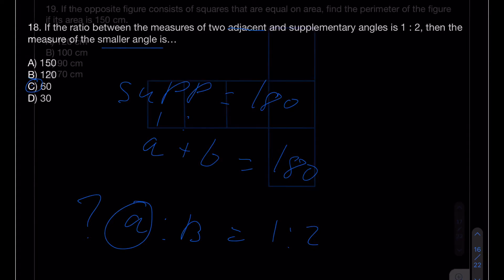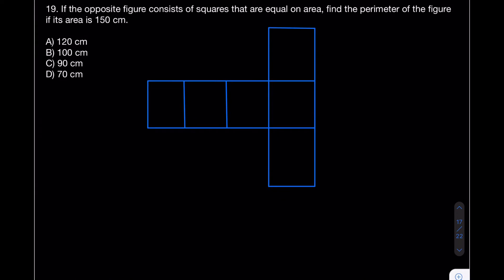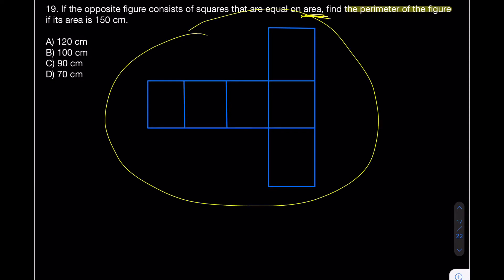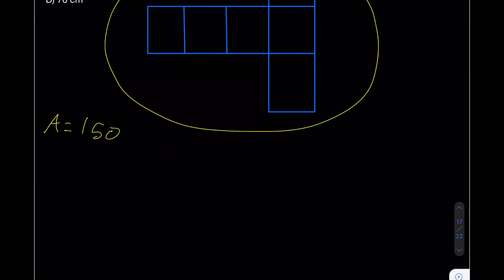Question 19 asks: the opposite figure consists of squares equal in area. Find the perimeter of the figure if its total area is 150. The first given: all squares are equal in area. The question: find the perimeter. Since there are 6 squares, divide 150 by 6 to get the area of each square.